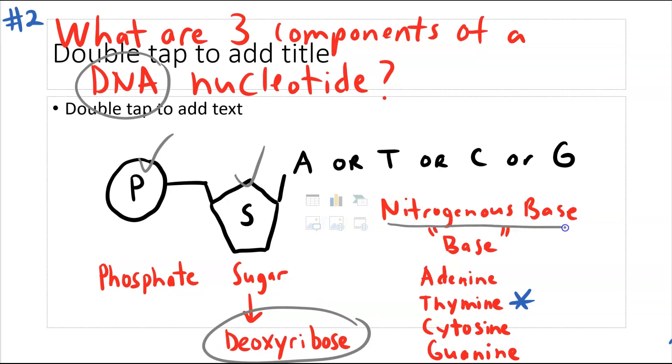And the nitrogenous bases that make it up are either adenine, thymine, cytosine, or guanine. So we call those generically bases. And those are the four. I put a star next to thymine because keep in mind that thymine is a DNA nitrogenous base, but does not exist for RNA. So RNA does not have thymine. Instead, uracil is substituted for that. So I think that's an important distinction to make.